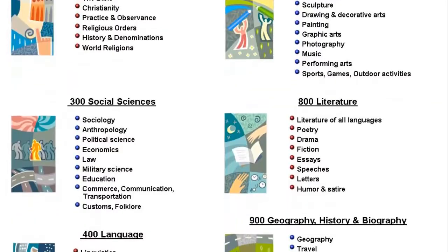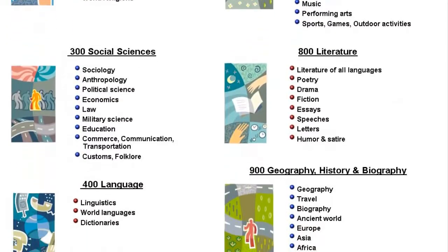Academic libraries, including Murray State, University of Kentucky, and West Kentucky Community and Technical College, use a system called Library of Congress, or LC.